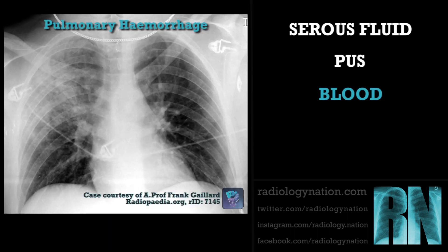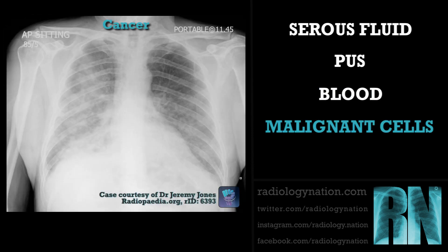Pulmonary hemorrhage causes blood to pool in the alveoli. This may be caused by trauma or autoimmune diseases such as systemic lupus erythematosus and granulomatosis with polyangiitis. Malignant cells can also accumulate in the alveoli in primary or metastatic lung cancer, creating radiographic consolidation.